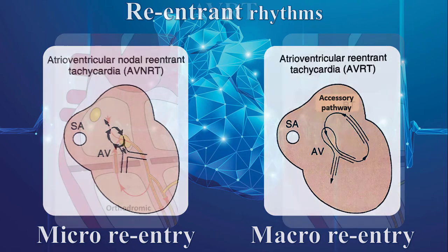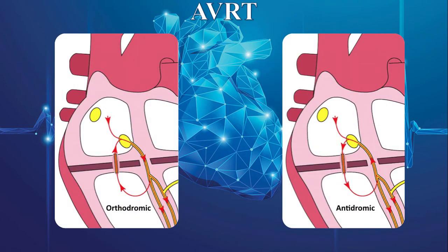In AVRT, the electrical impulse can circulate between atria and ventricles in two different directions. First, anterograde conduction through the AV node, followed by retrograde conduction through the accessory pathway — this type of AVRT is called orthodromic AVRT. And second, anterograde conduction through the accessory pathway, followed by retrograde conduction through the AV node — this one is known as antidromic AVRT.